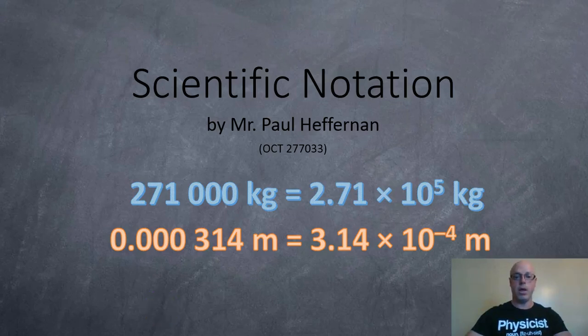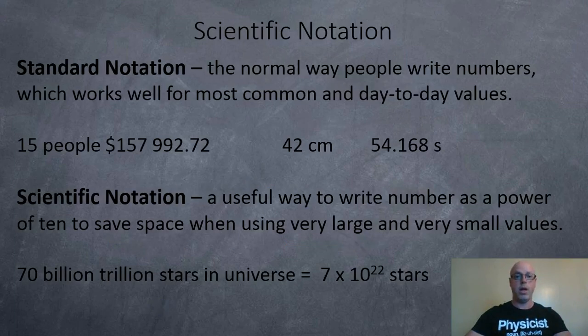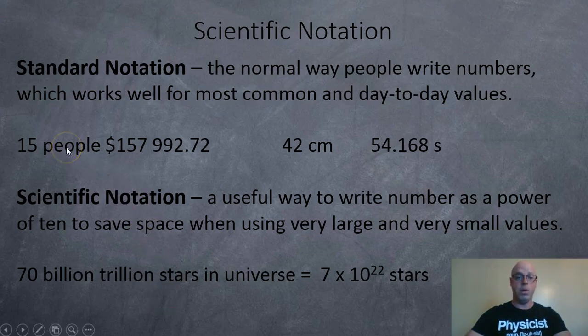Hi, Mr. Hepburn here, and this is a quick video on scientific notation. Standard notation is the normal way people write numbers, which works well for most common and day-to-day values. For example, 15 people, $157,992.72, 42 centimeters, 54.168 seconds.